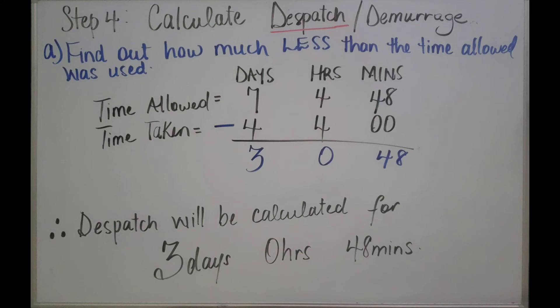Step 4: Calculating dispatch or demurrage. I underline dispatch because we used less time than was allowed, so we are calculating dispatch. The first step is to find how much less than the time allowed was used. We subtract the time used from the time allowed. The time allowed is 7 days, 4 hours and 48 minutes; the time used is 4 days, 4 hours and 0 minutes. When we subtract, we get 3 days, 0 hours and 48 minutes. So dispatch will be calculated for 3 days, 0 hours and 48 minutes.